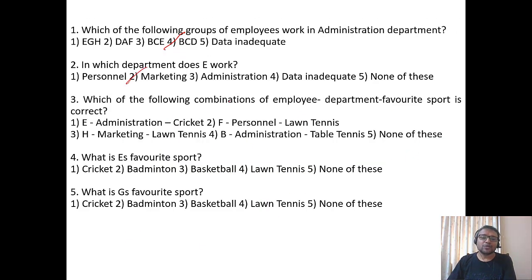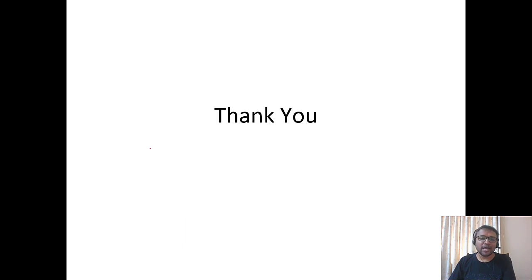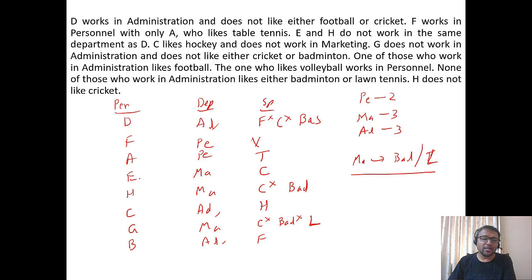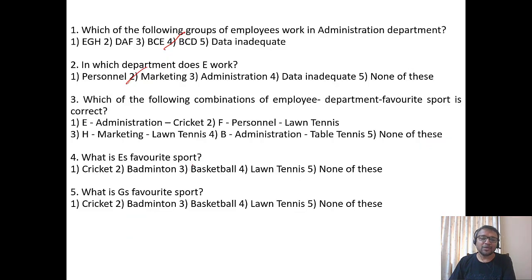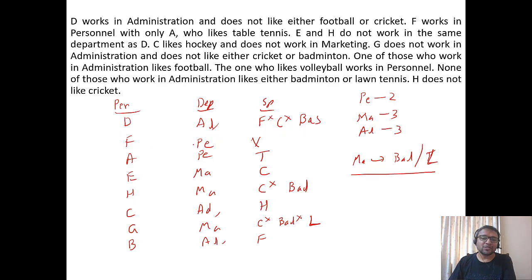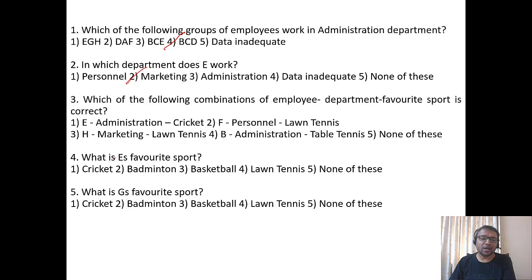Question 3: Which combination of employee-department-favorite sport is correct? E-Administration-Cricket: E is in Marketing, so wrong. F-Personnel-Lawn Tennis: F is not lawn tennis, wrong. H-Marketing-Lawn Tennis: H is badminton, wrong. B-Administration-Table Tennis: